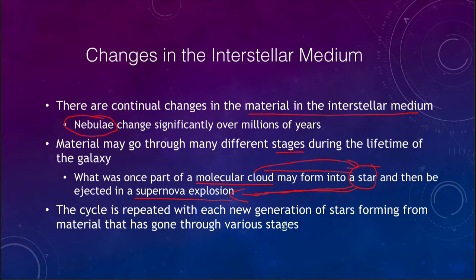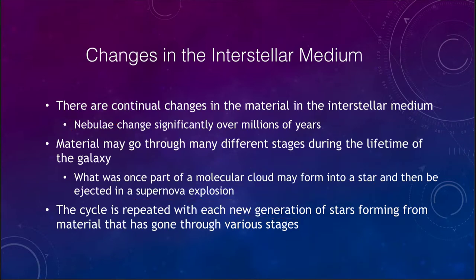We continue to repeat this cycle with each new generation of stars, but the material now becomes enriched in heavier elements — meaning it now has more heavy elements, more things other than just hydrogen and helium. Let's take a little bit of a look at how that works.